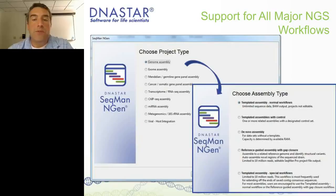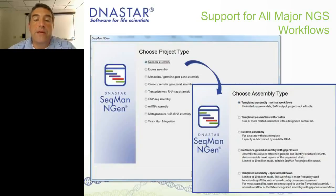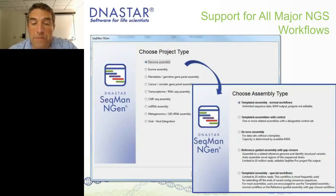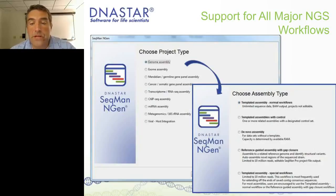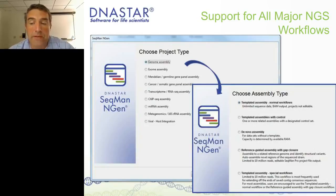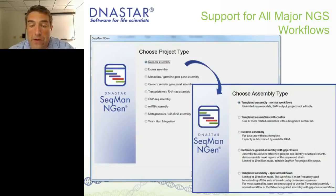Our software supports all the different NGS workflows. The starting point is SeqMan Engine, a 64-bit program that runs on Mac, PC, and Linux. You can choose different project types ranging from genome assembly to exome, to panels, transcriptome, ChIP-seq, viral, host integration, and metagenomic. This is really a project setup wizard. If you select genome assembly, the next page will let you choose the type — including a template assembly producing a BAM output file, or a de novo option using a de novo algorithm.